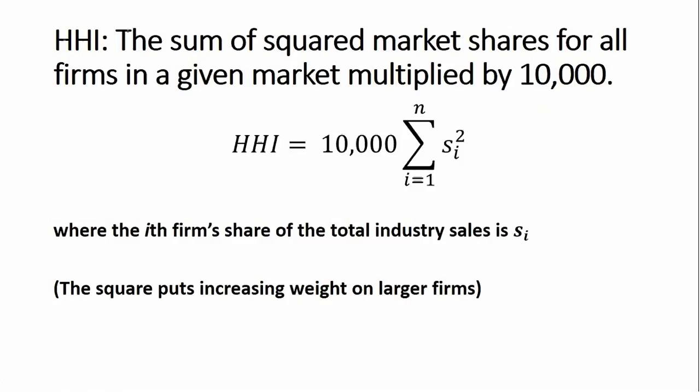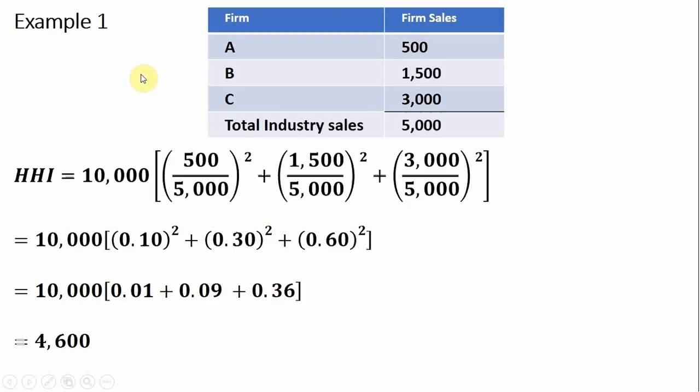So let's do several examples. Example one, we have a three-firm industry. Firm A has $500 of sales for the year, Firm B has $1,500, and firm C has $3,000. So the total industry sales are $5,000. Taking this information, let's plug it into our formula.